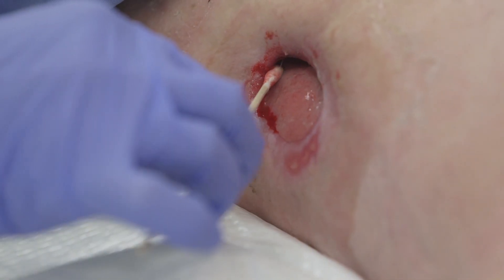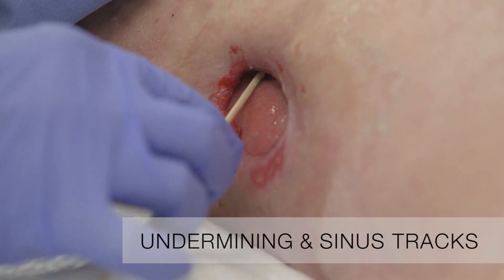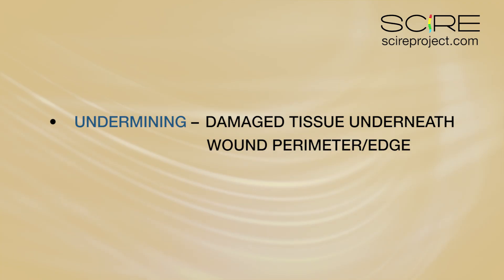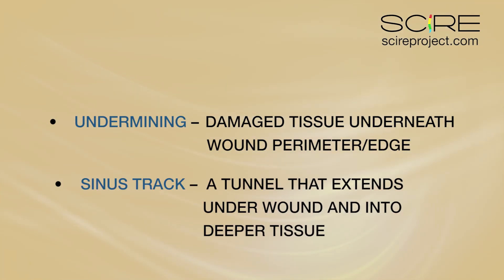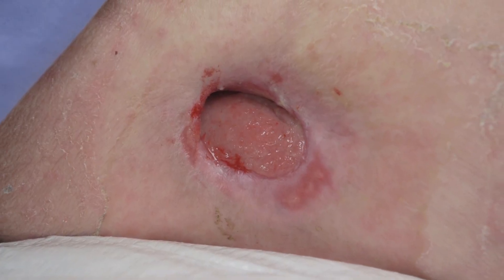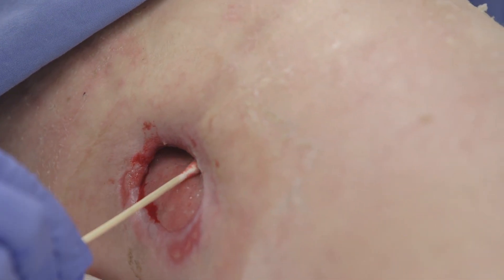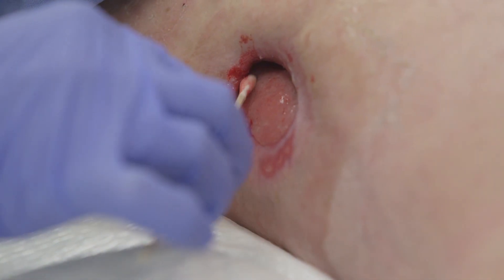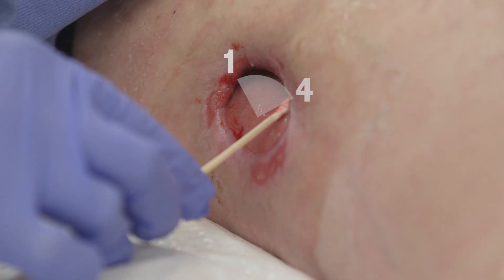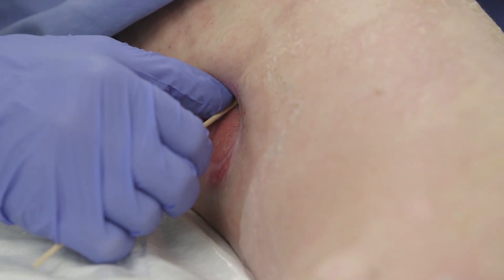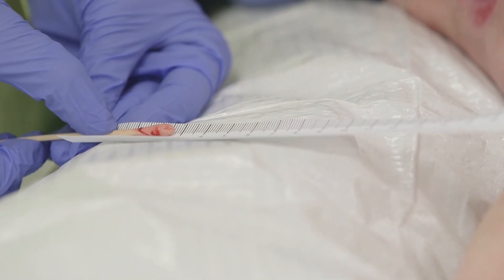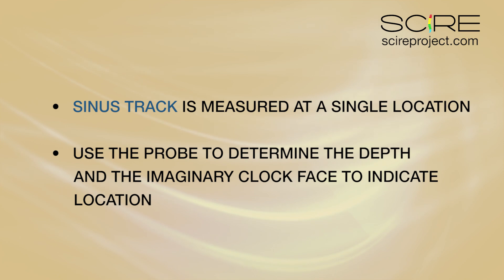Once the length, width, and depth have been measured, it is important to determine if any undermining or sinus tracts are present. Undermining is destruction of tissue that occurs beneath the intact skin of the wound perimeter. A sinus tract is a tunnel that extends from any part of the wound and tracks into deeper tissue. To describe undermining or sinus tracts, an imaginary clock face is visualized over the wound bed, with 12 o'clock at the head of the patient and 6 o'clock at the patient's feet. Undermining is assessed by performing a sweeping motion with the probe around the perimeter of the wound. If undermining exists, it should be described using the clock for direction — for example, from 1 o'clock to 4 o'clock. The depth of undermining should be measured with the probe and the maximum depth recorded. A sinus tract is measured at a specific location and reported by using the imaginary clock face. Use the probe to determine the depth of the tunnel.